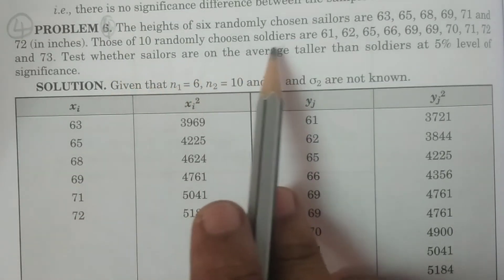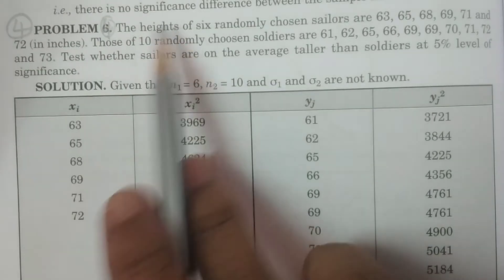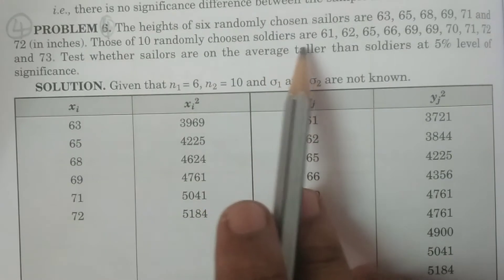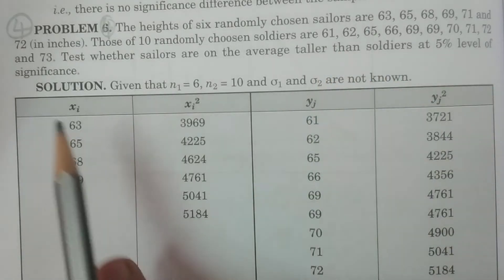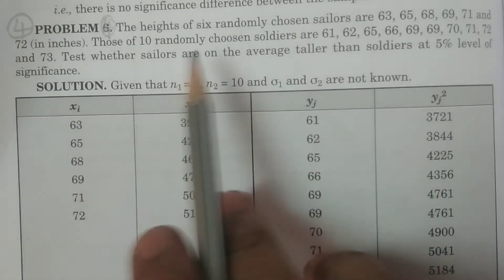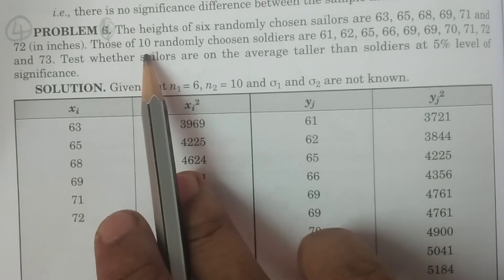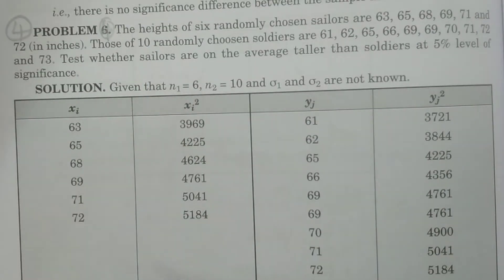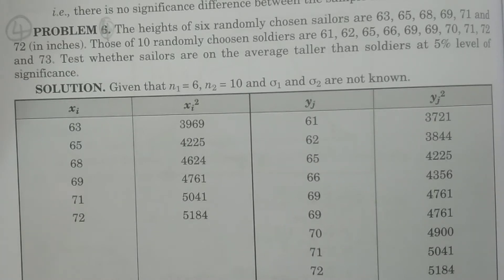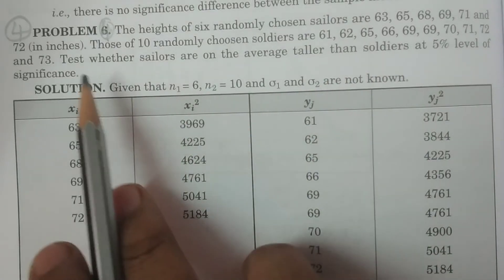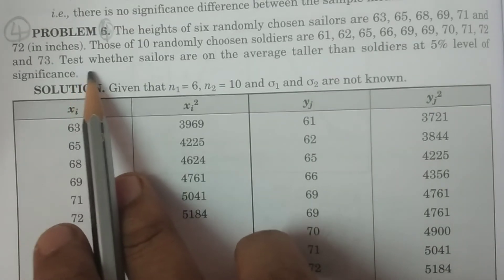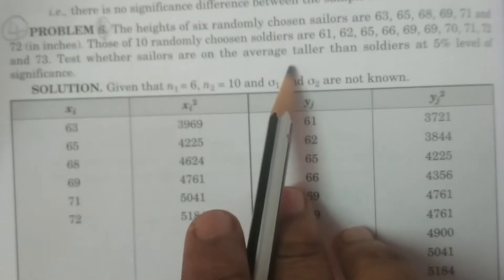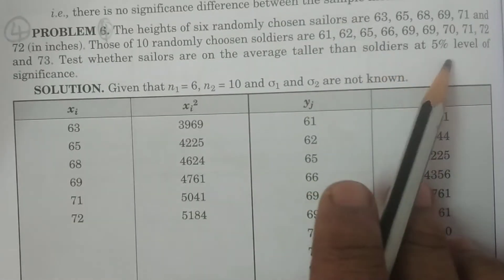The heights of 10 randomly chosen soldiers are 61, 62, and so on up to 73 — the data is given. So another sample is also given, with size 10, that is n2 equal to 10. These are the sample sizes of the two particular samples and the data — their heights are given.